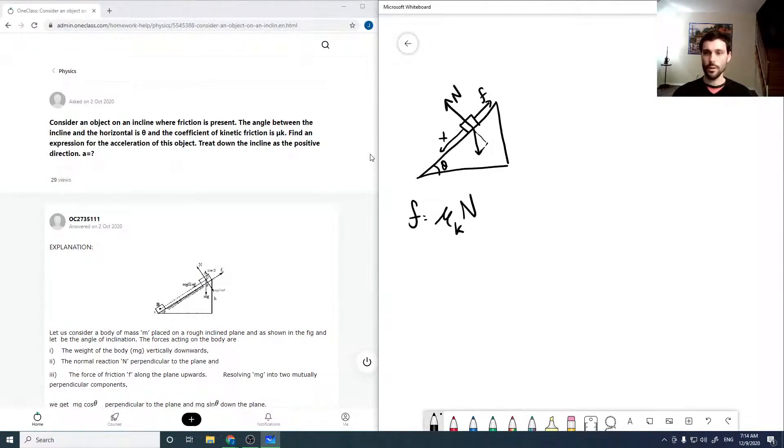So if we look at this triangle here, I'll put it here actually. So we've got this. Okay, and so that is our mg, where g is our gravitational acceleration and m is the mass of our object.